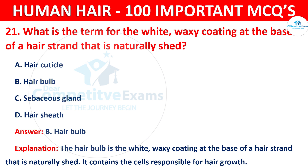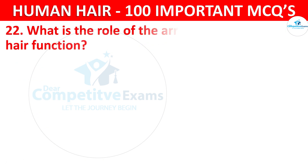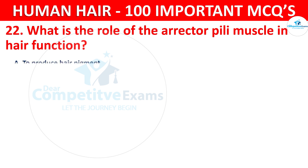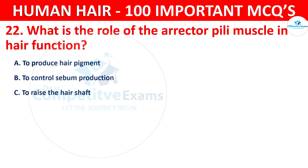Question number 22. What is the role of the arrector pili muscle? The options are to produce hair pigment, to control sebum production, to raise the hair shaft, or to regulate hair growth.